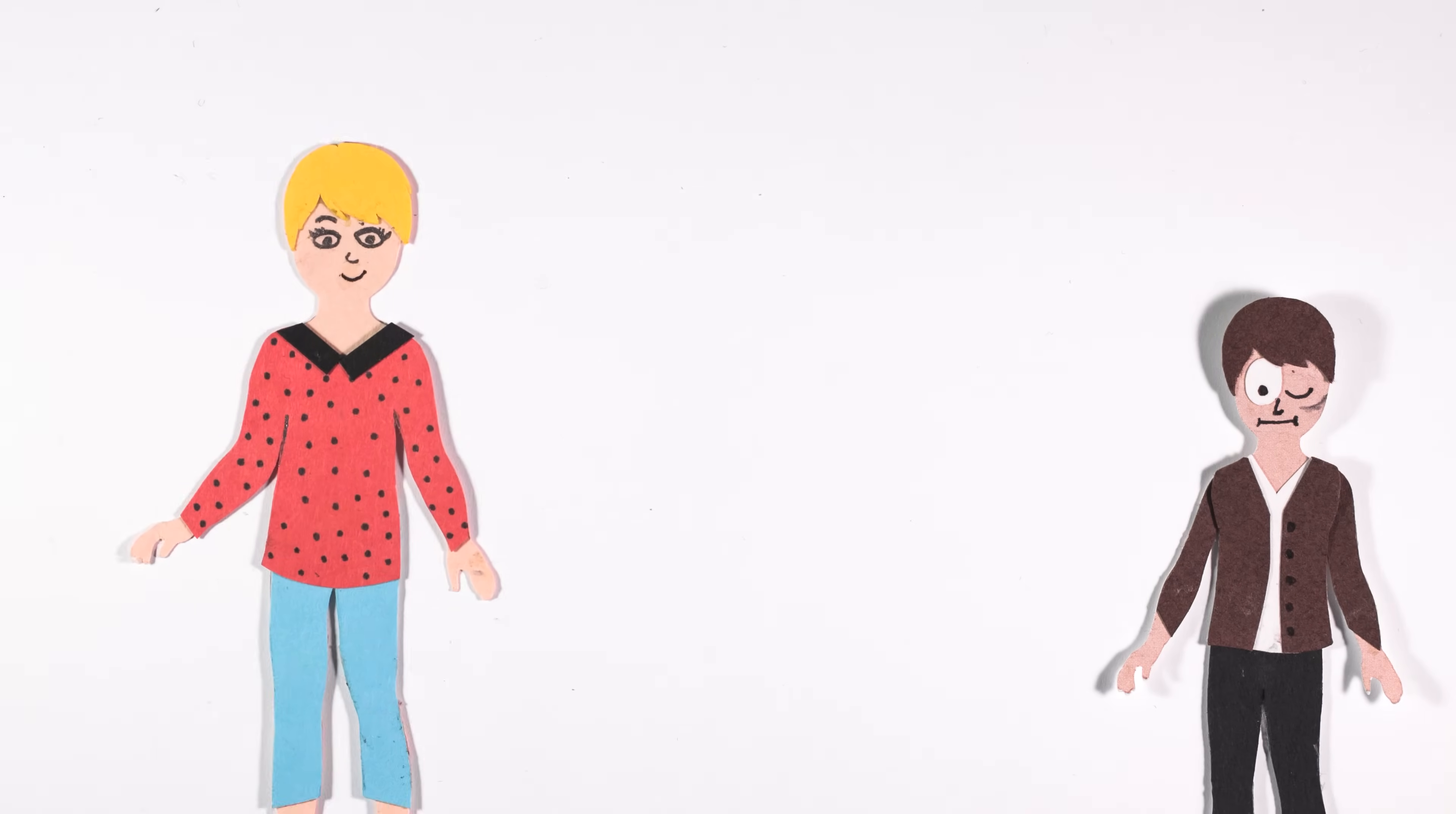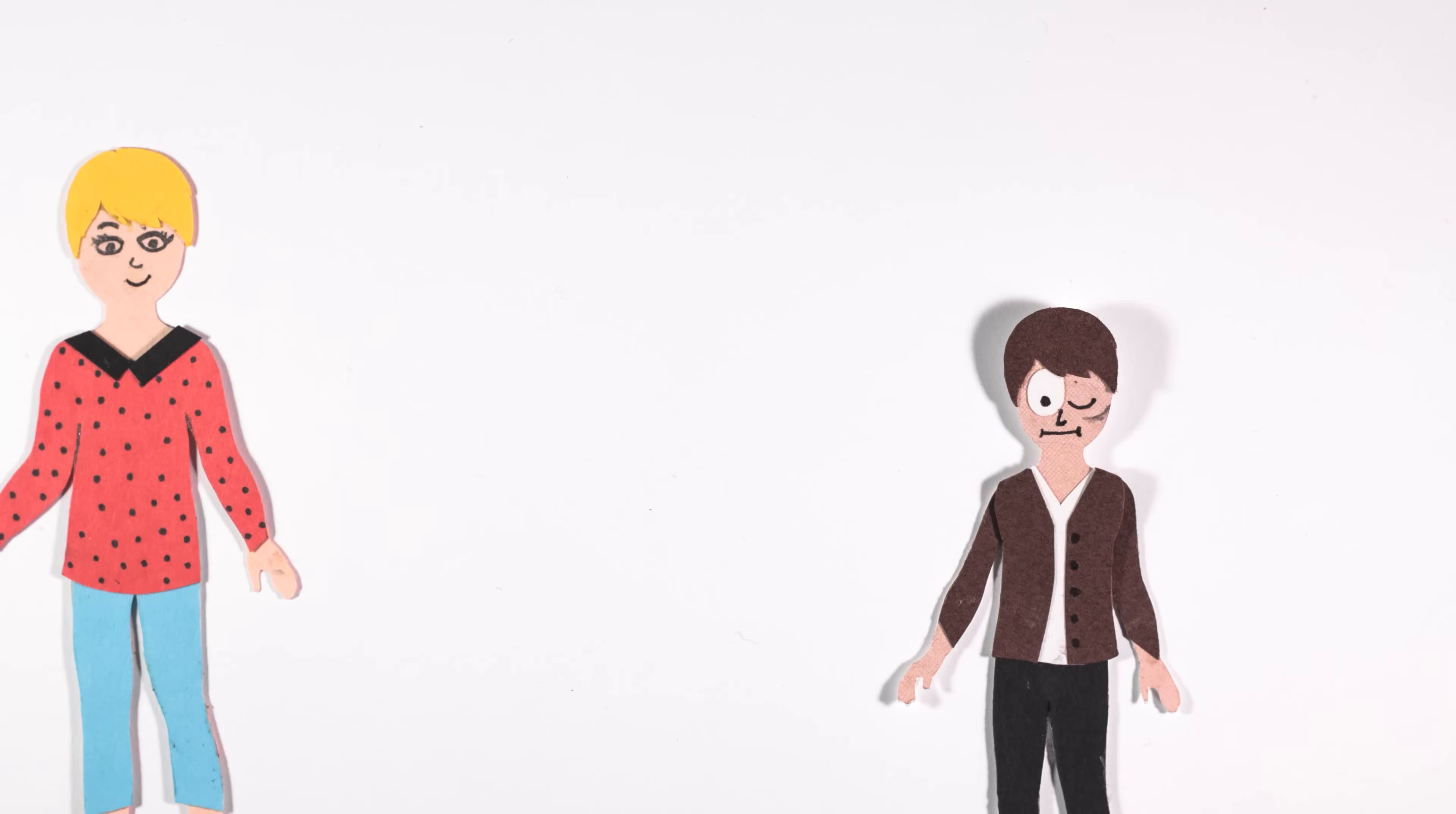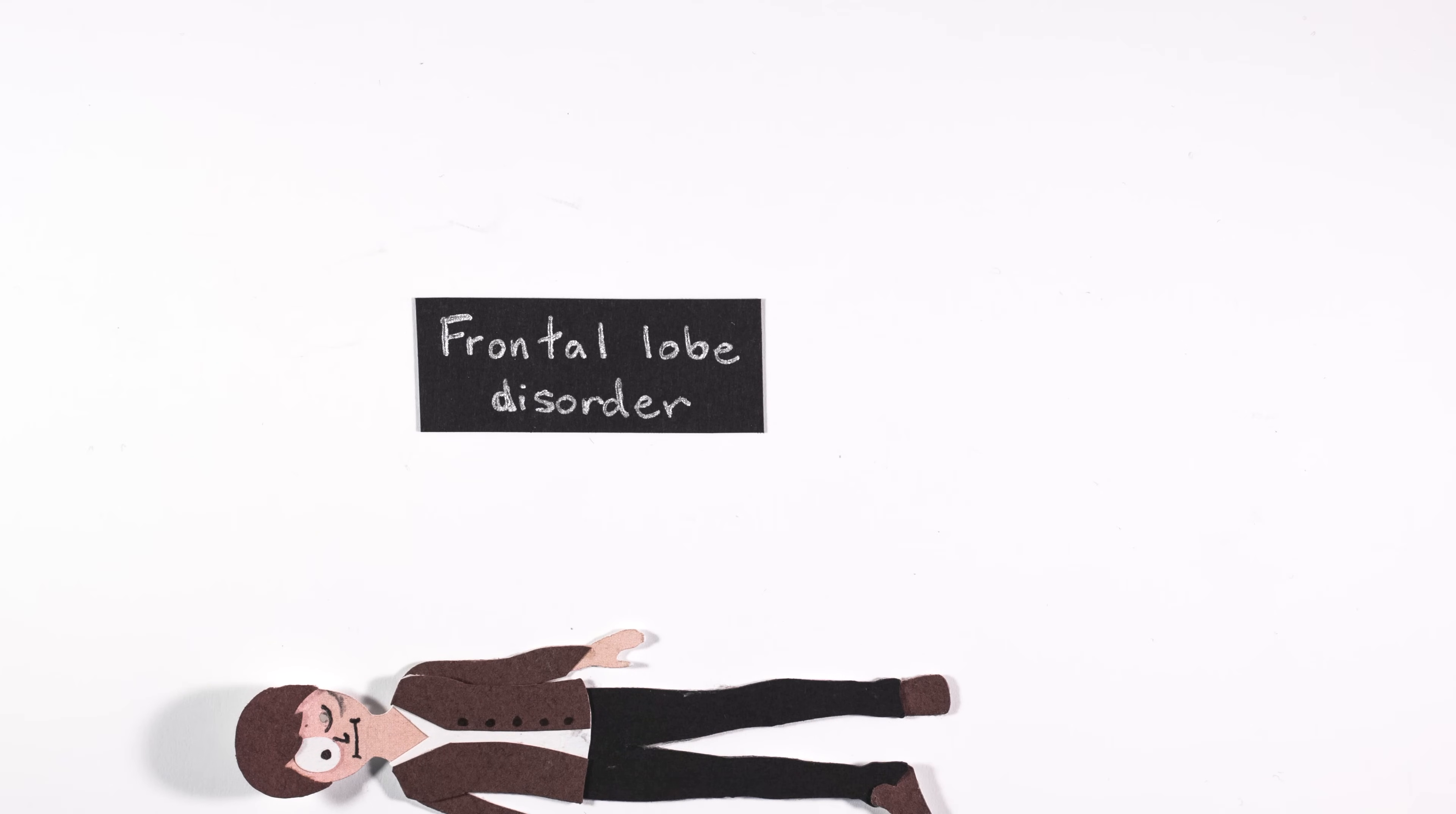But those who knew him said Gage was no longer Gage. He was rude and impatient. The rod had penetrated his frontal lobes, responsible for higher mental functions like social behavior and planning. And Gage could have had what we now know as frontal lobe disorder.